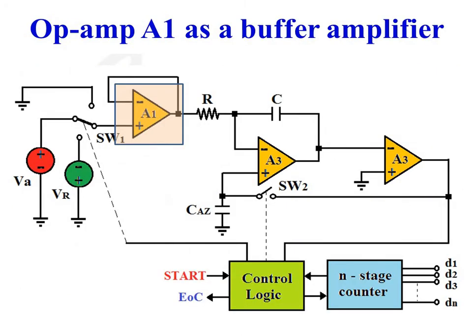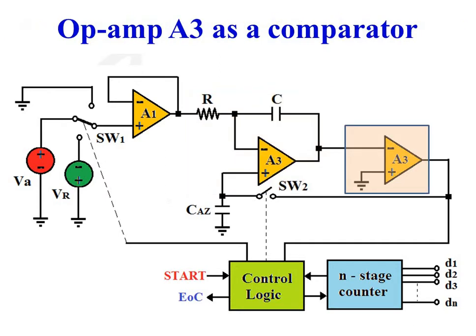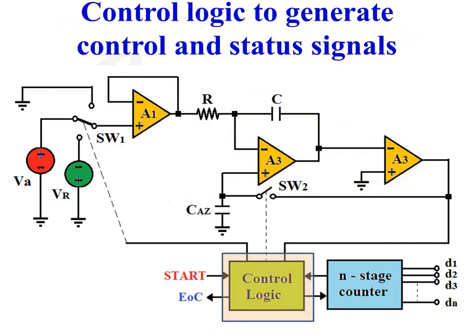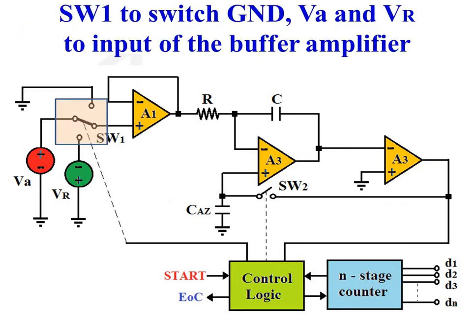Operational amplifier A1 is connected as a buffer amplifier with unity voltage gain. Operational amplifier A2 is connected as a precision integrator, and op-amp A3 is connected as a comparator. The function of the control logic is to generate control and status signals. The end stage counter counts clock signals fed by the control logic. Switch SW1 is used to connect ground, analog input signal VA, and reference voltage minus VR to the input of the buffer amplifier.